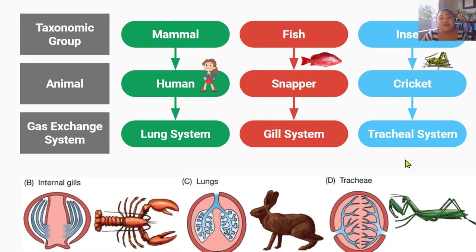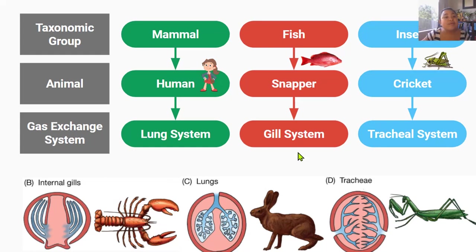Those are the four characteristics of an efficient gas exchange system that all animals need to get enough oxygen from the environment to supply aerobic respiration in their cells. All these animals need the same thing — an efficient gas exchange system — but they all go about getting it in different ways. Different taxonomic groups have different adaptations to meet those four requirements: increasing surface area to volume ratio, keeping their respiratory surface moist and thin, and maintaining a large concentration gradient.